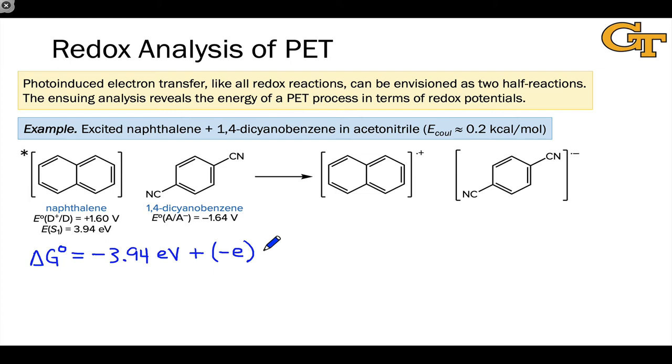Finally, the third thing that's happening is the oxidation of naphthalene. What we're given here is the reduction potential of the naphthalene radical cation as positive 1.60 volts. Since oxidation of naphthalene is happening, we're going to throw a negative sign right here to reverse the sign of this potential.